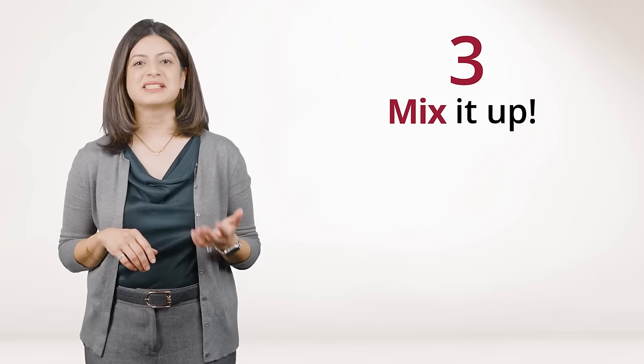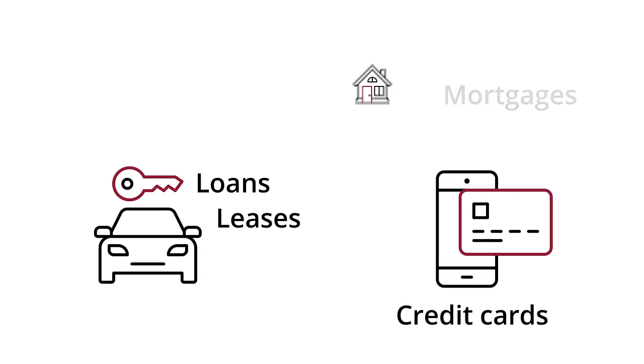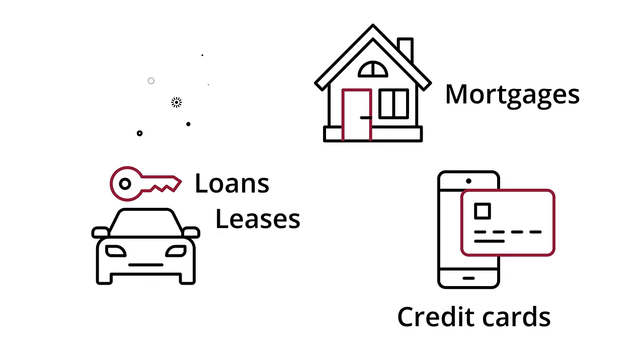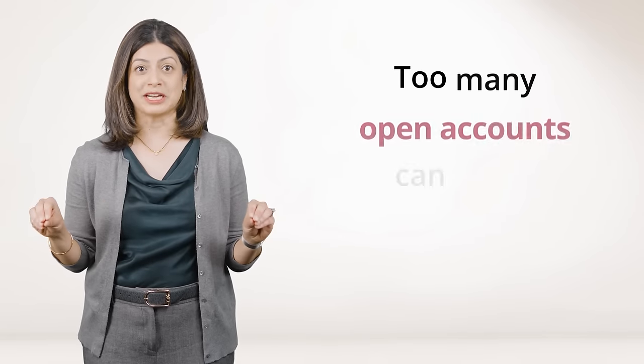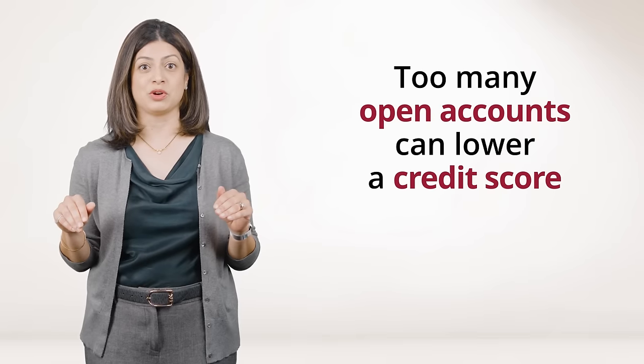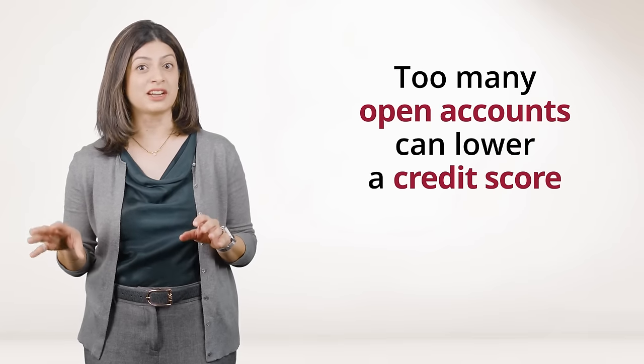Number three, try to mix it up. Having a mix of accounts like car loans and leases, credit cards, or a mortgage can help your score. Keeping those accounts for longer periods of time while paying them on time and keeping a low balance can also help improve your score. However, too many open accounts can lower a credit score, so it's important to only take out credit you need and can afford.